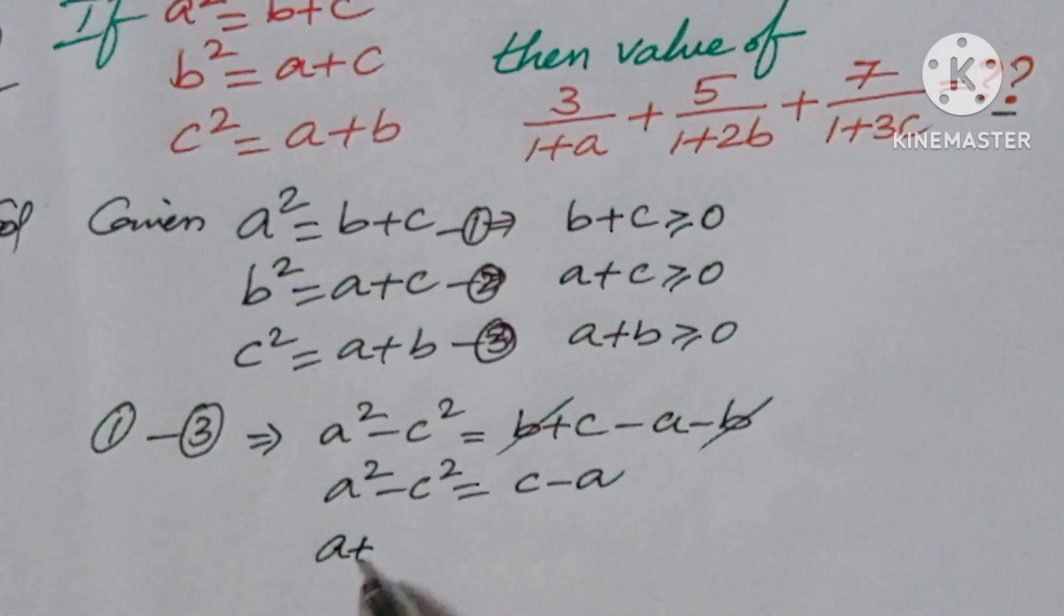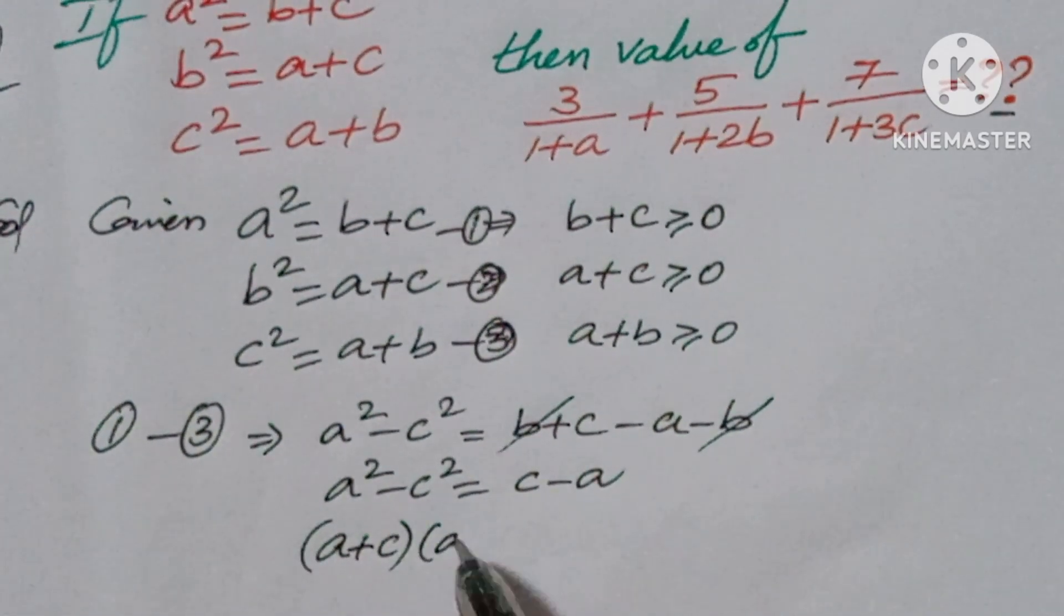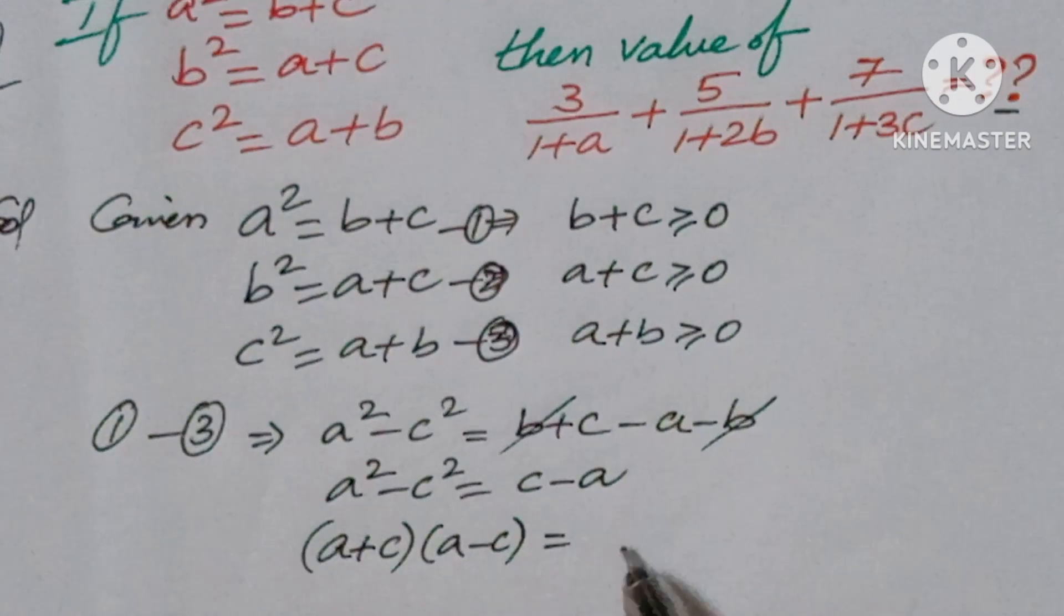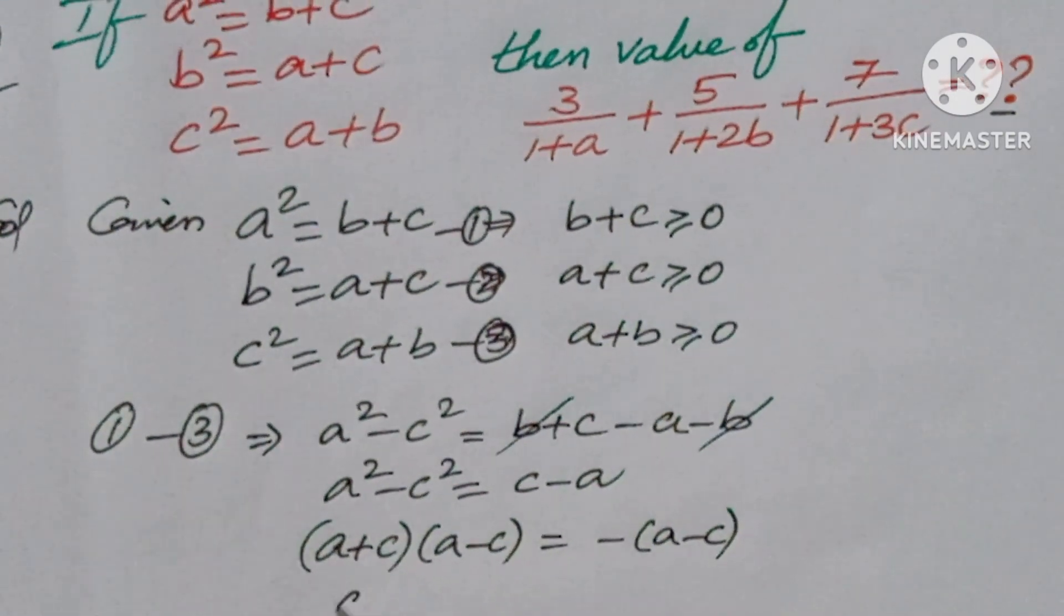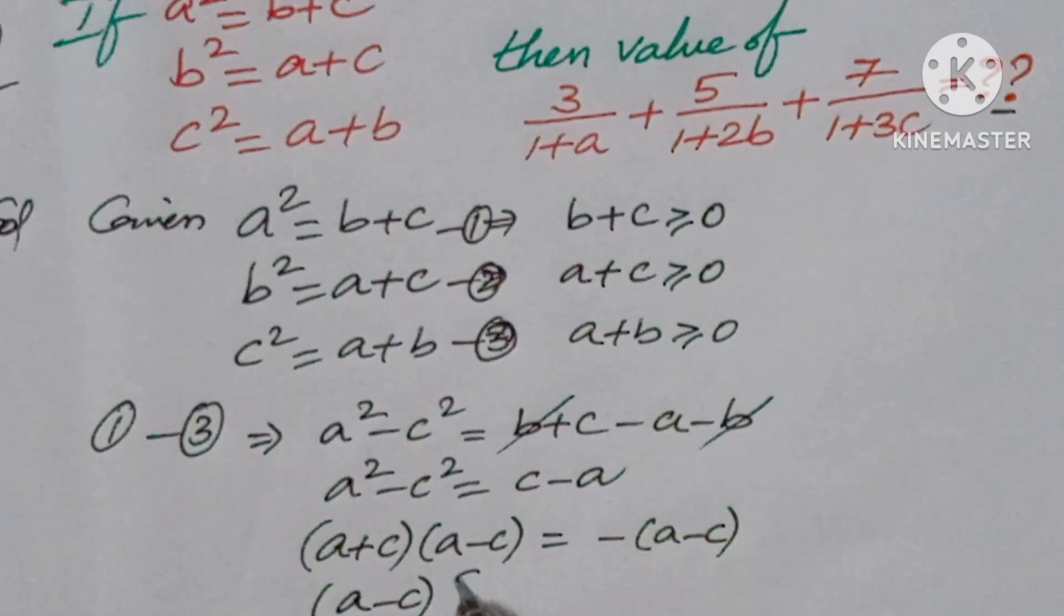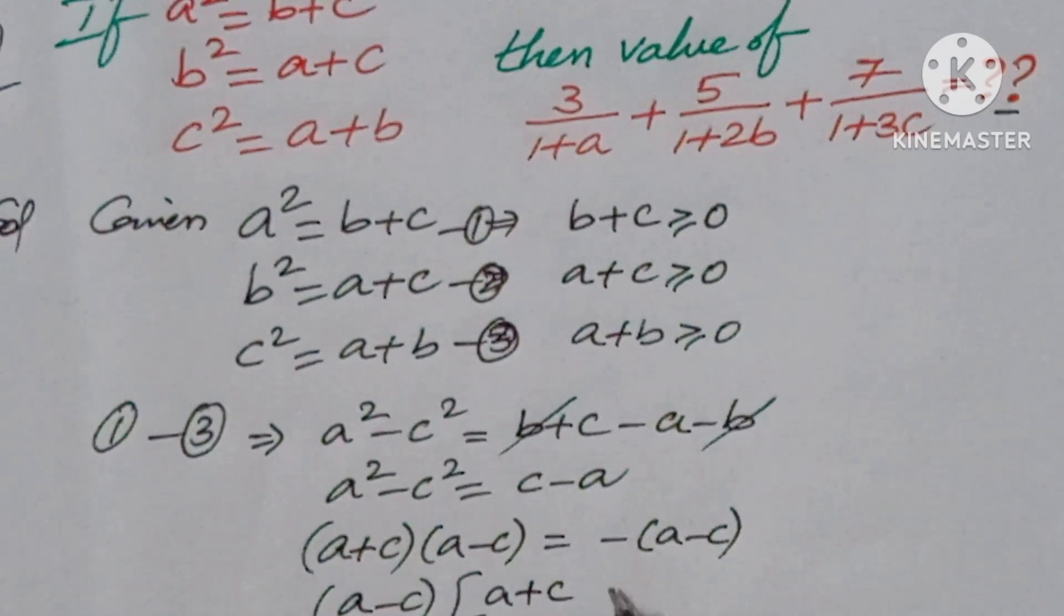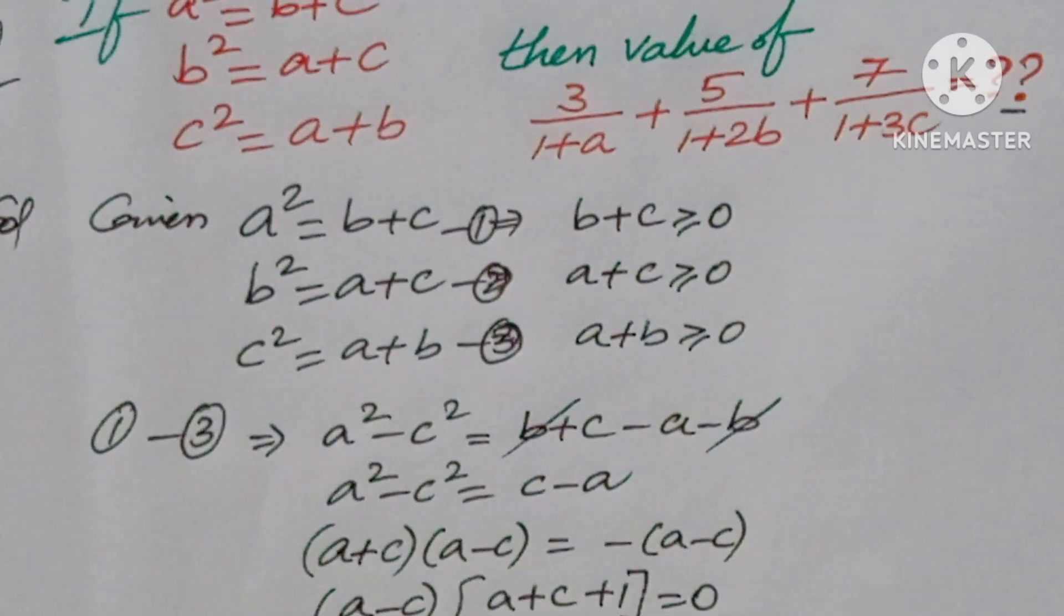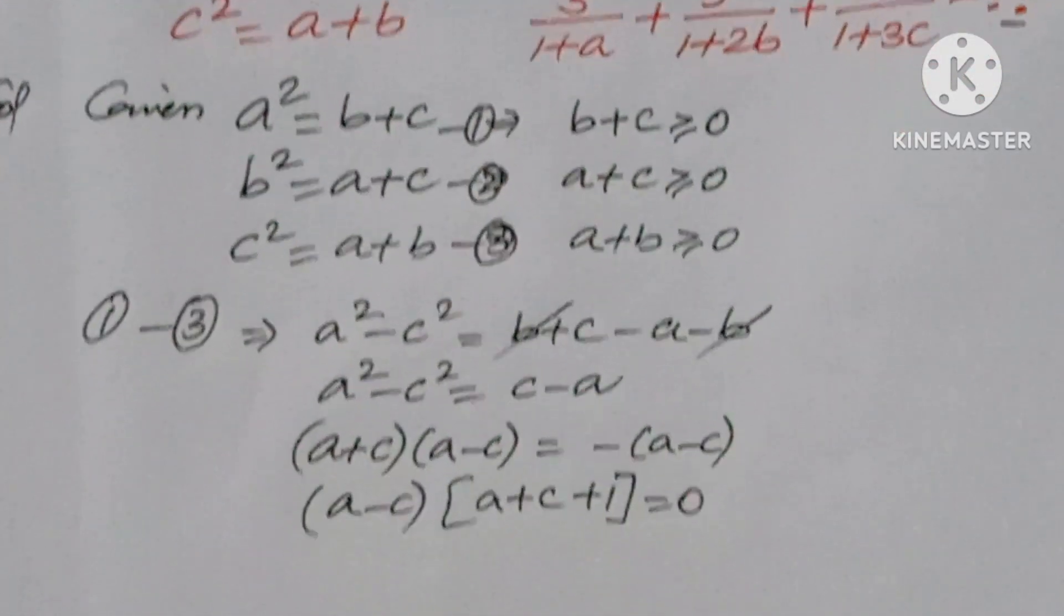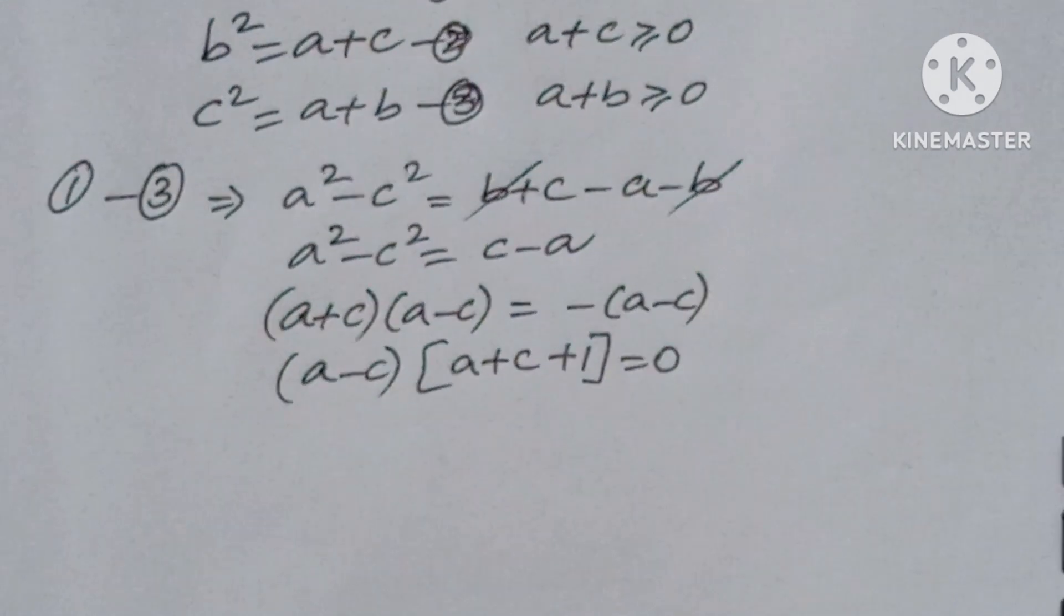Now (a+c)(a-c) is equal to minus (a-c). Now you can take a minus c common here. (a-c)(a+c+1) equal to 0, so a+c+1 equal to 0.